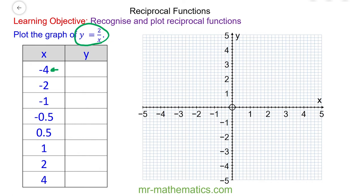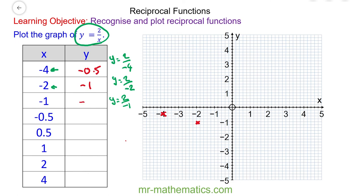To begin with, the value of x is negative 4, so y is equal to 2 divided by negative 4, which is negative 0.5, and that would go approximately here. Next, y is equal to 2 divided by negative 2, and that is negative 1, so that would go here. Then y is equal to 2 divided by negative 1, which is negative 2, and we can plot that at the coordinate negative 1 and negative 2. Then y is equal to 2 divided by negative 0.5, so y is equal to negative 4 — we can plot that here.